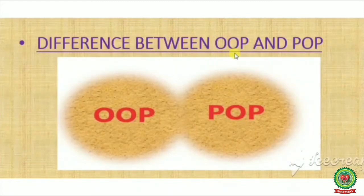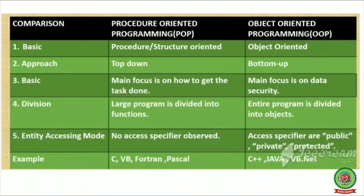Next we will discuss the difference between Object Oriented Programming and Procedure Oriented Programming. Number 1: Procedure oriented programming is structure oriented, as it is based on procedures or functions. In case of Object Oriented Programming, as it is based on real world objects or entities like car, bank account, pencil, book — so it is object oriented.